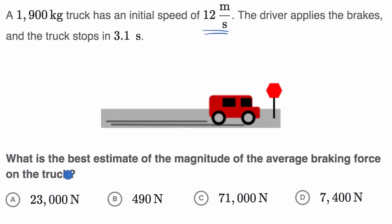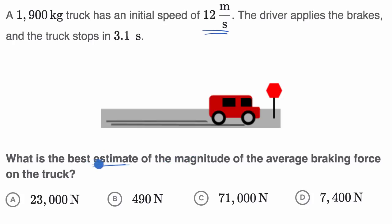The simplest way to approach this is to figure out the magnitude of the acceleration — the average acceleration on that truck as it comes to a stop. Then we can use Newton's second law, F equals ma, because we know its mass. If we know the mass and the magnitude of the acceleration, we can find the magnitude of the average braking force. They just want us to estimate it, and the choices are pretty far apart, so an estimate will serve us well.